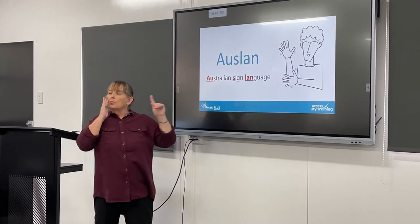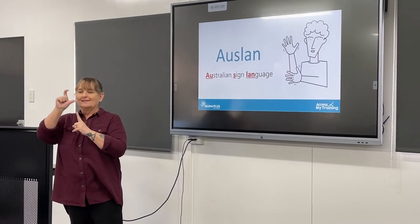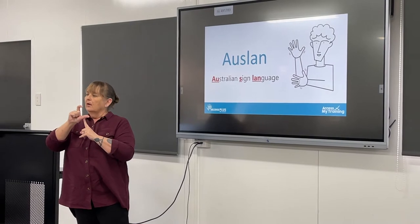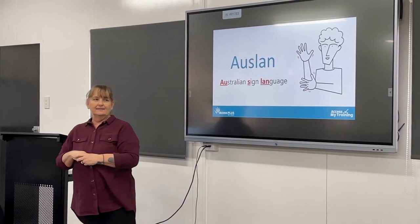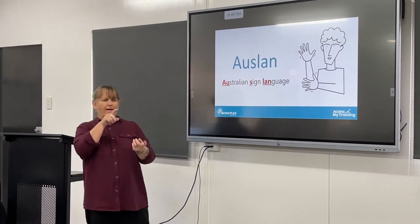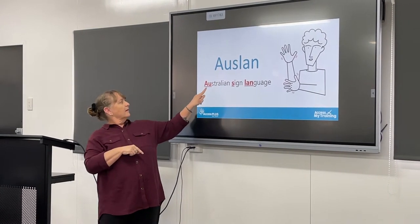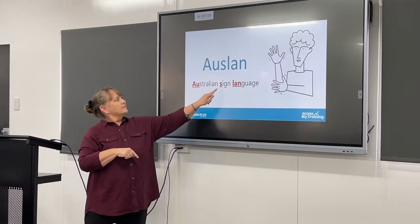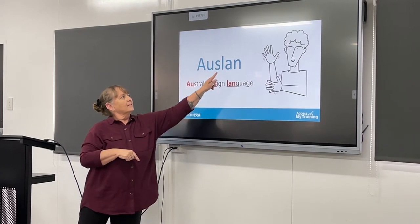So that's the word we use: Auslan. When you spell it, the A is always a capital and the rest of the letters are lowercase. Can you see how we got the word Auslan? See they're in red — A-U-S-L-A-N.